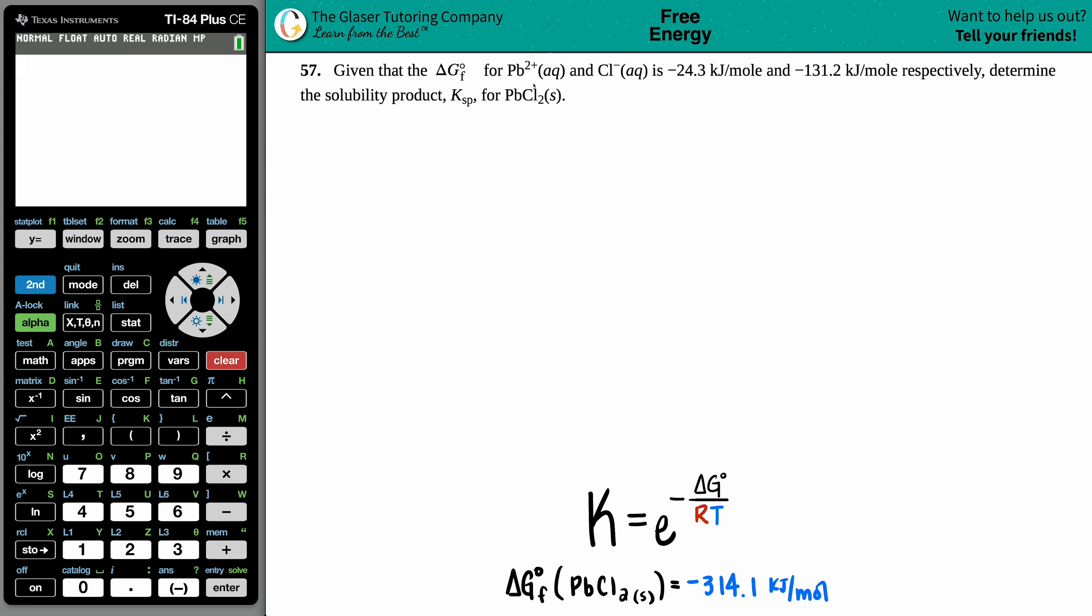Number 57: Given that the ΔG of formation for Pb²⁺ aqueous and Cl⁻ aqueous is -24.3 kilojoules per mole and -131.2 kilojoules per mole respectively, determine the solubility product (Ksp) for PbCl₂ solid. Okay, so it seems like at the end of the day we have to find that Ksp.